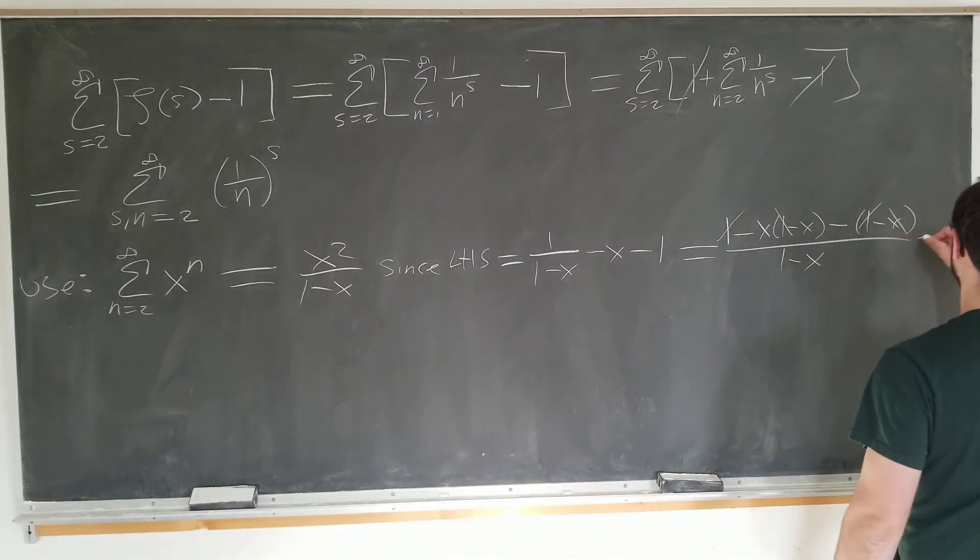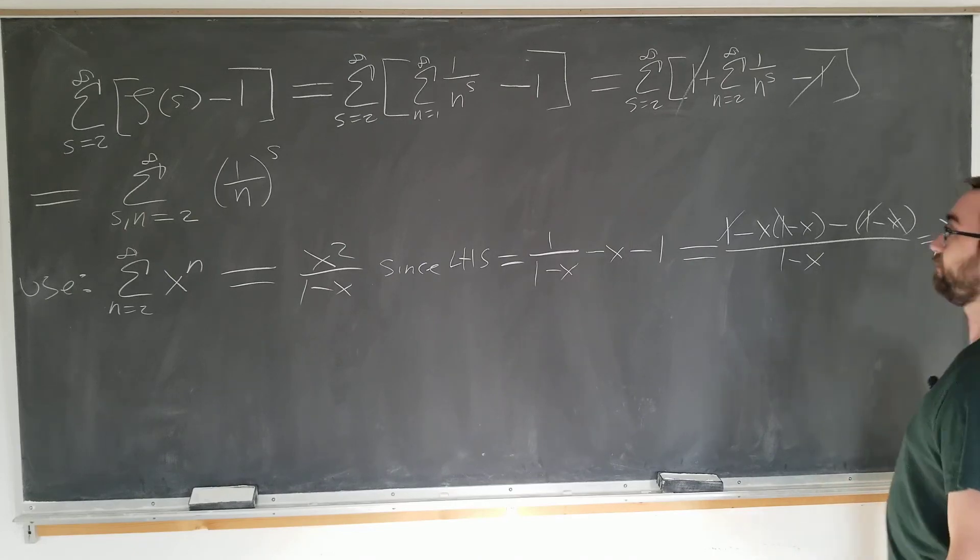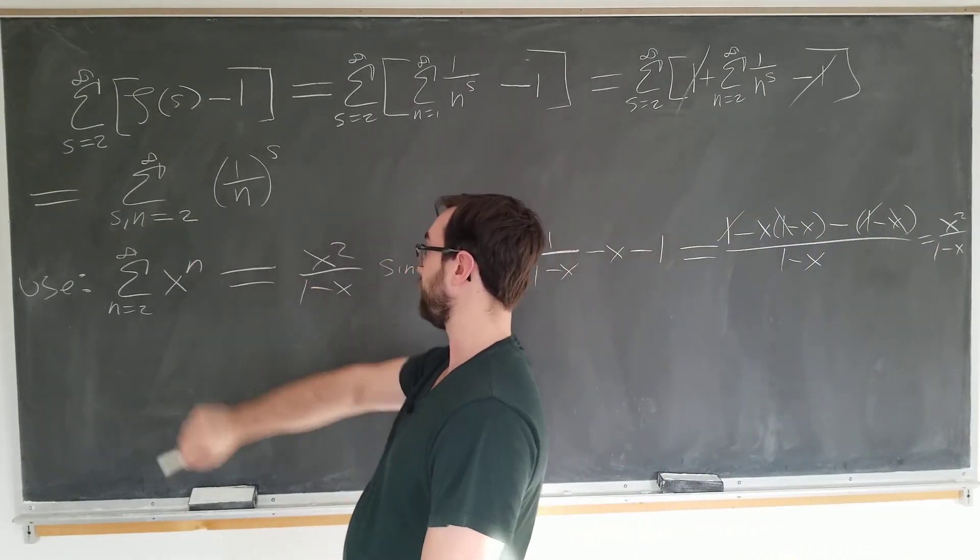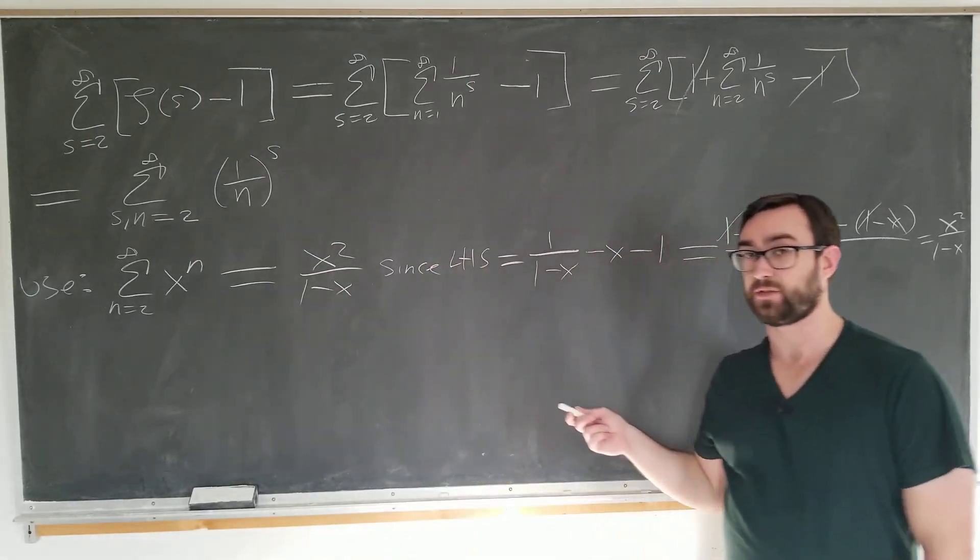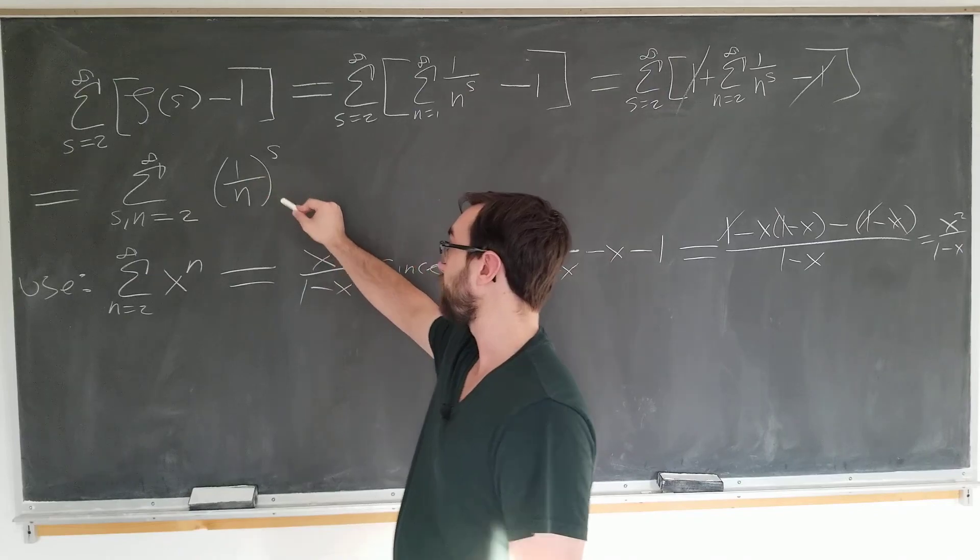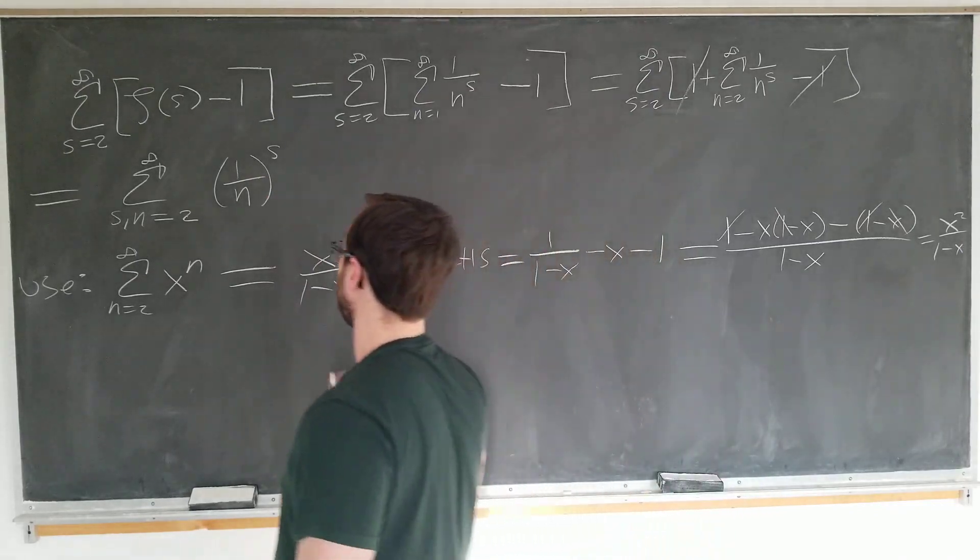Additional step here just for clarity: x squared over 1 minus x. Now let's sum over n. We already have this in the form where we can apply the geometric series that we just derived. If we let 1 over n be the constant and s be the variable, we'll do this now.